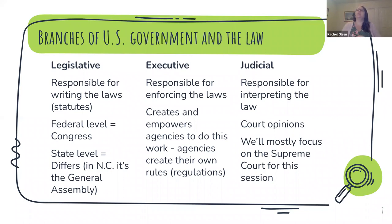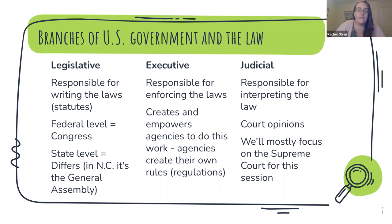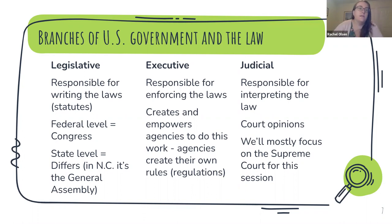The executive branch is responsible for enforcing the laws. At the federal level, the executive branch does this in a variety of different ways. When an issue is particularly complicated or nuanced or would require a lot of oversight, they'll actually create agencies to do this work and empower those agencies. And agencies write their own rules or regulations. The judicial branch is responsible for interpreting the law, and this usually comes in the form of court opinions. For this session, we are mostly going to focus on the Supreme Court of the United States, but we will talk a little bit about how the court system in the United States is organized.